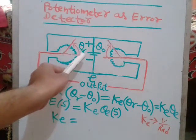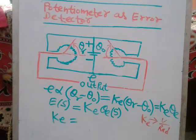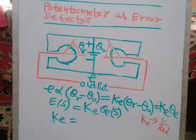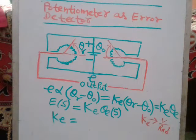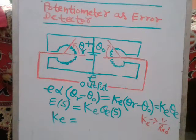The angular positions are theta_r and theta_naught. Error detectors are used to measure, or sense, the error signal in a control system. This error is basically the difference between the actual magnitude of the output and the desired output.